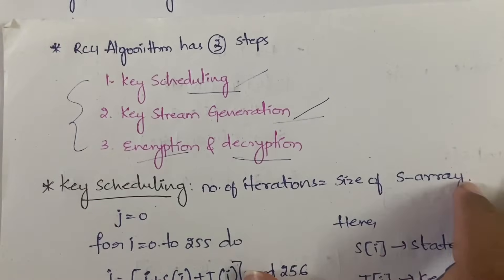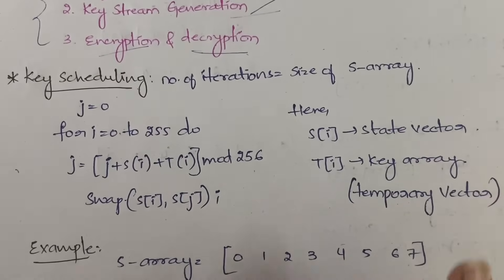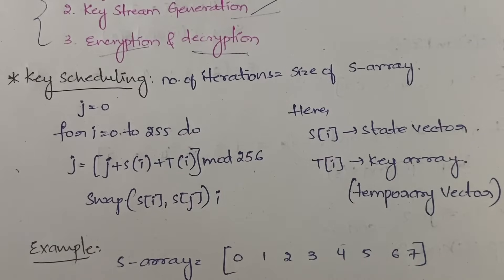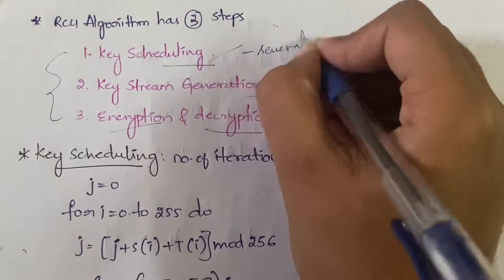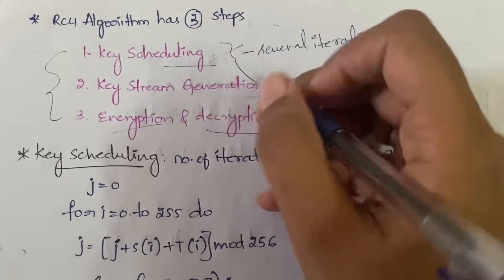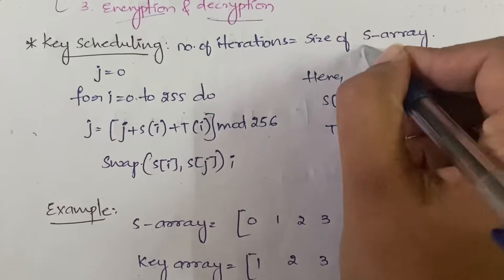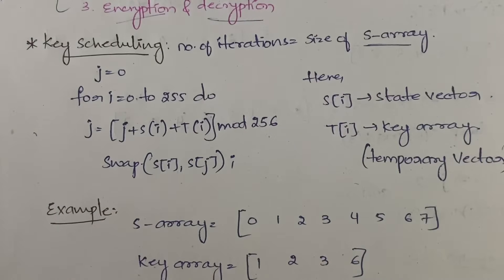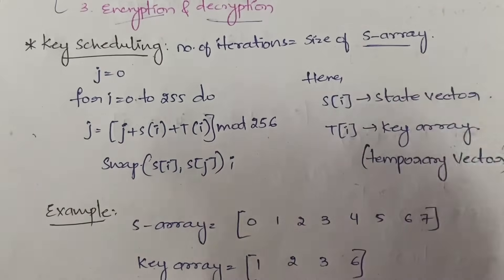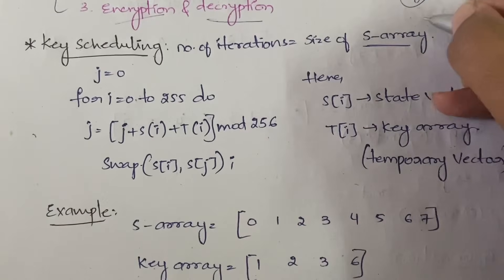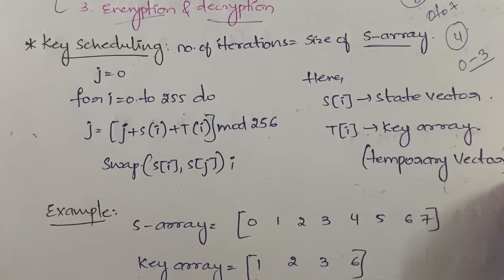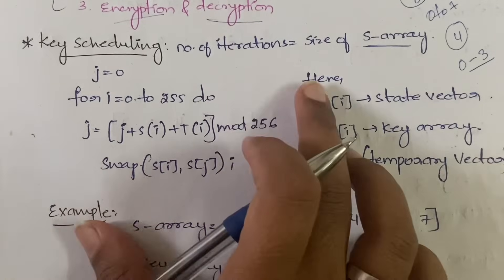In key scheduling and key stream generation, you will have several iterations. The number of iterations depends on the size of the S array. If the size of the S array is 8, you do 8 iterations from 0 to 7. If the size is 4, you do 4 iterations from 0 to 3. You have a specific algorithm to follow for key scheduling.